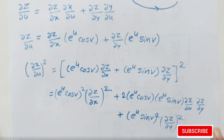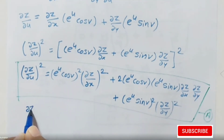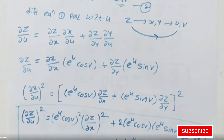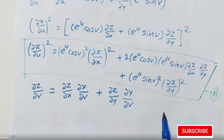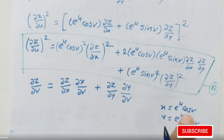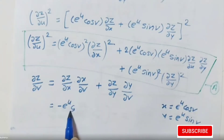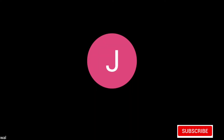Similarly we differentiate with respect to v. The derivative of x = e^u·cos(v) with respect to v gives −e^u·sin(v), and the derivative of y = e^u·sin(v) with respect to v gives e^u·cos(v). So ∂z/∂v = −e^u·sin(v)·(∂z/∂x) + e^u·cos(v)·(∂z/∂y).